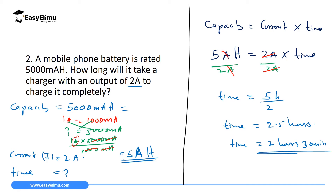When you connect the phone at zero, it will show 2 hours and 30 minutes until full. Write down what you have — capacity, current, and time — then substitute in SI units. The time will always come out in hours. You can calculate how long your phone will charge if you know its capacity and your charger's output.